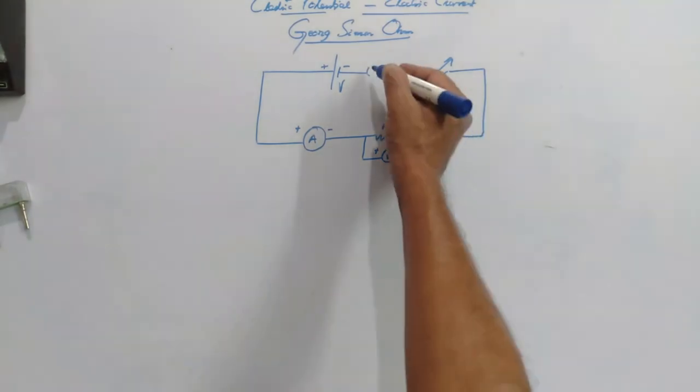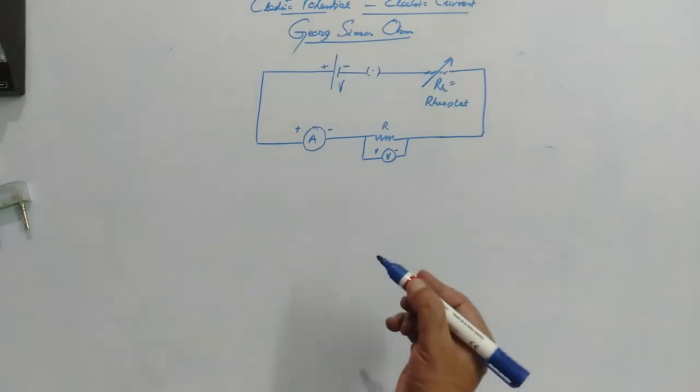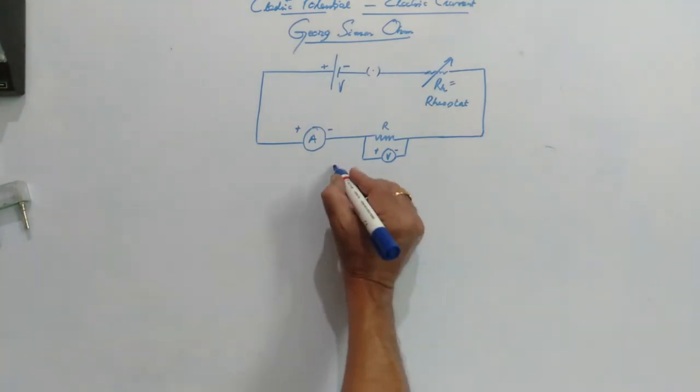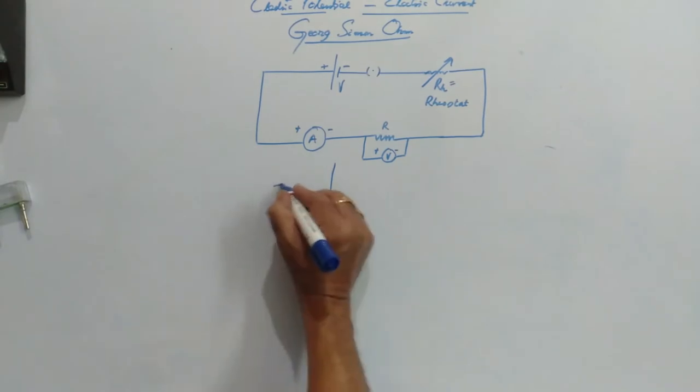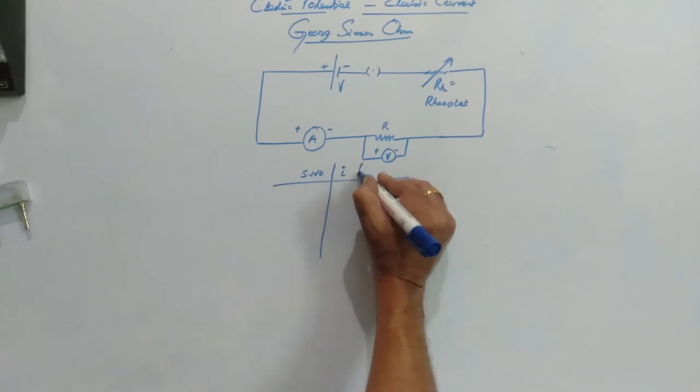Now, after inserting a plug, the circuit will be completed. And then, we have to take the readings of the current through the ammeter,